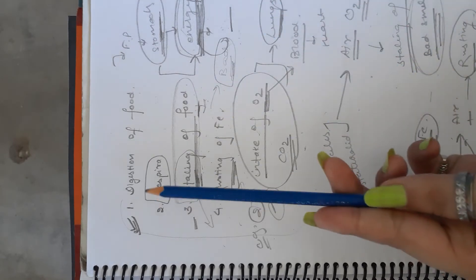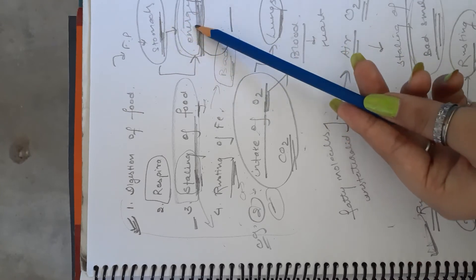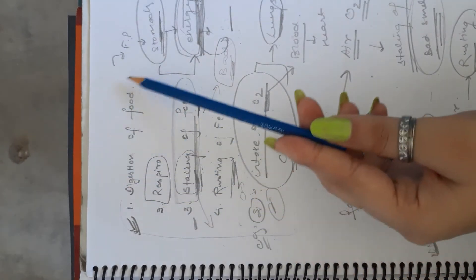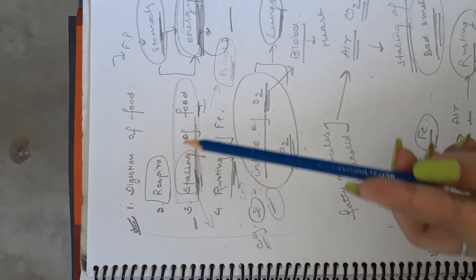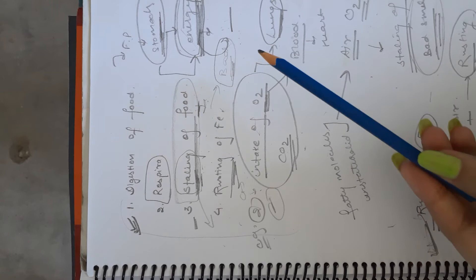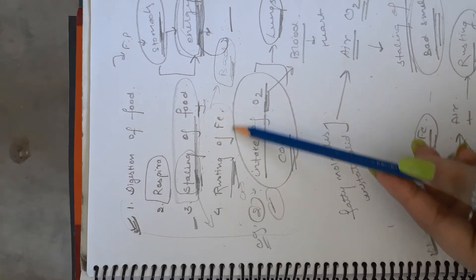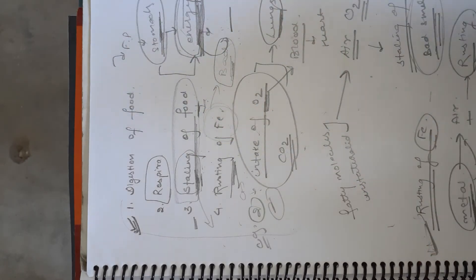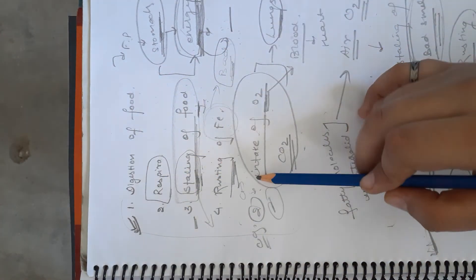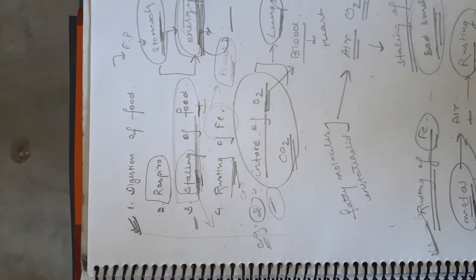Like when we digest food, some kind of chemical reaction occurs in our stomach — can you take that food back? No. Like staling of food: first it is in a healthy state, then it is converted to unhealthy. Can you reverse it? Same with rusting of iron — the metal gets rusted, can you take it back to its original state? No. These all are irreversible changes. Chemical reactions are irreversible in nature.